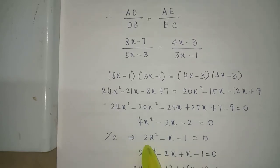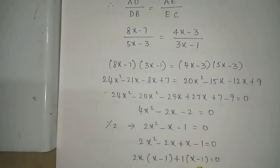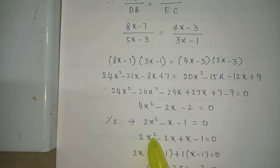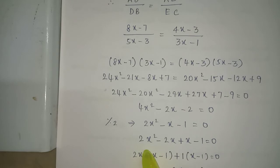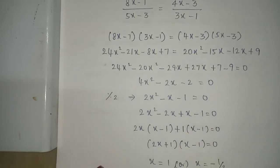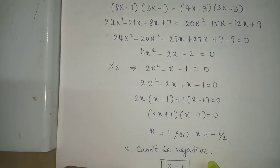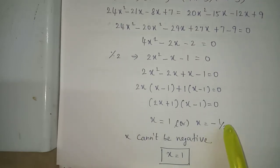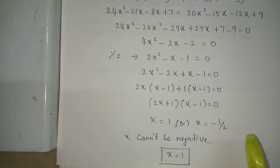This is a quadratic equation, so we split the factors: 2x² minus 2x plus x minus 1 equals 0. Taking 2x common: 2x(x minus 1) plus 1(x minus 1) equals 0. Equating factors to zero gives x equals 1 and x equals minus 1 by 2. Since x cannot be negative, the value of x is equal to 1.